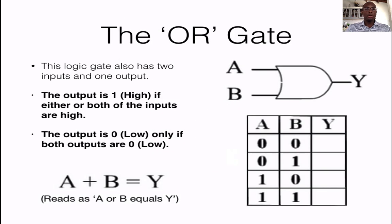The next gate on our list is the OR gate. This logic gate also has two inputs and one output. The output is 1 or high if either or both of the inputs are high. The output is 0 low only if both inputs are low.